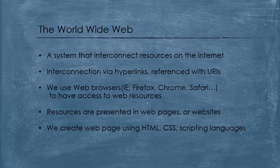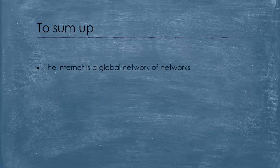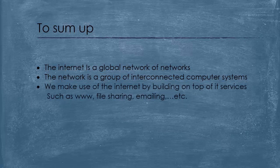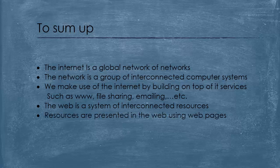So to sum up, we've seen that the internet is a global network of networks and that the network is a group of interconnected computer systems. We have also seen that we make use of the internet by building on top of it services such as the World Wide Web, file sharing, emailing, etc. Also the web is a system of interconnected resources, resources that are presented using web pages or websites. To access these web pages or websites we use web browsers.